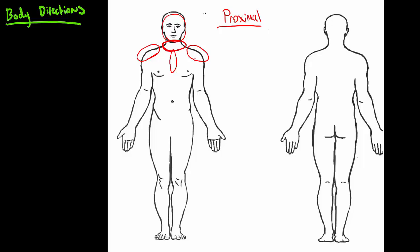So with distal we're looking for something that is far away from the reference object. And again let's pick the neck as our reference object and let's find something that's distal. So no longer will it be the things that are close by like the shoulders. We're looking at things like the elbows or the hands.